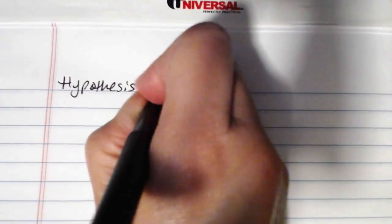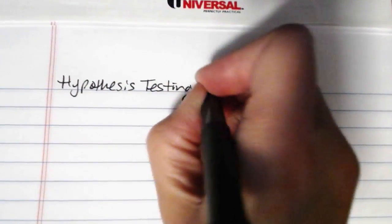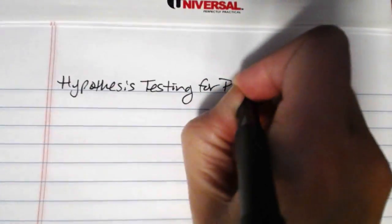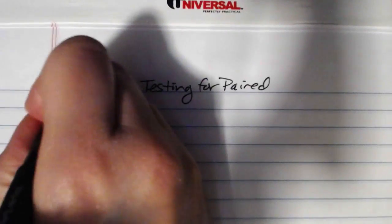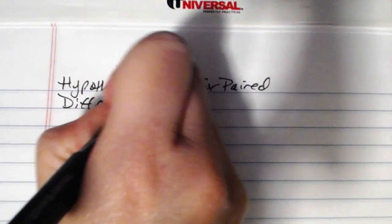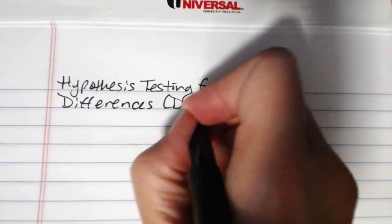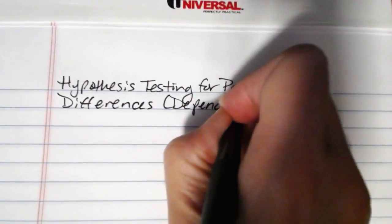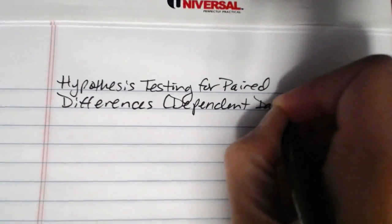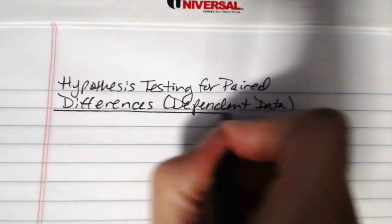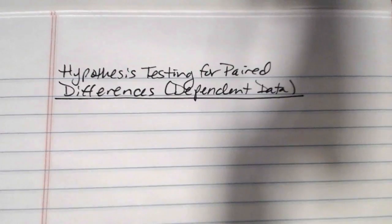In this video we're going to be looking at conducting tests involving paired differences. So hypothesis testing for paired differences. Another way to think about this is if your data are dependent, if your two groups are dependent on one another, this is usually the way to do that.